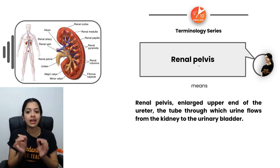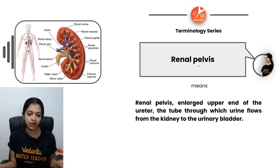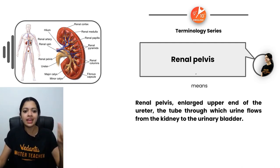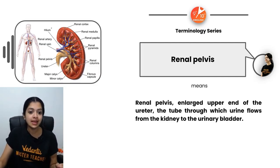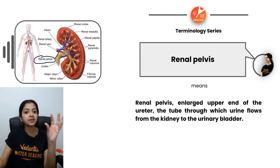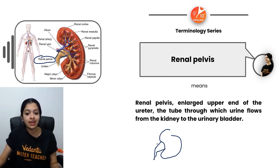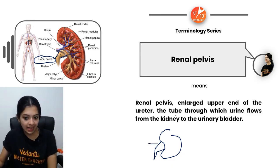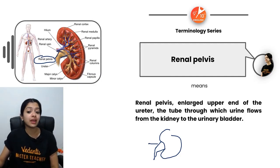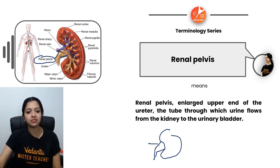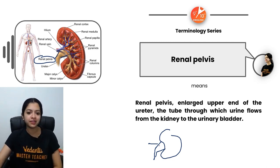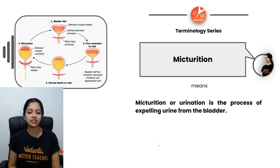Renal pelvis is often confused with the hilum because they are very close to each other. The renal pelvis is the enlarged upper end of the ureter — the tube through which urine flows from the kidneys into the urinary bladder. So the hilum is the recessed fissure, while the renal pelvis is the enlarged upper part of the ureter.